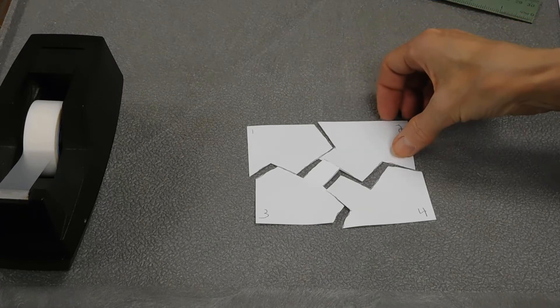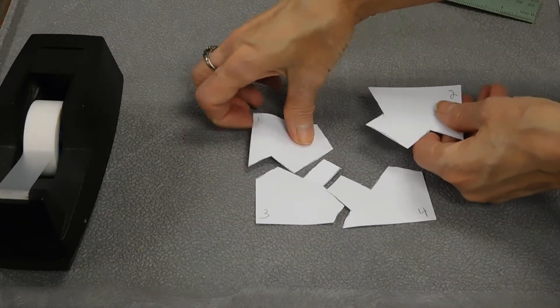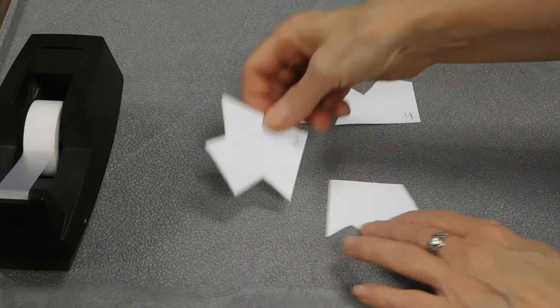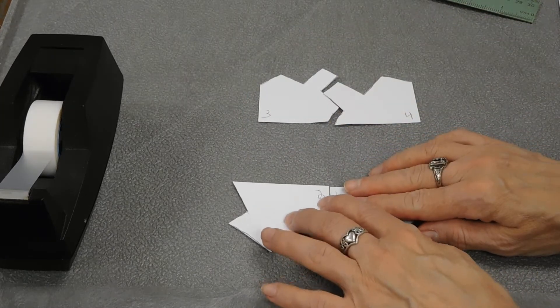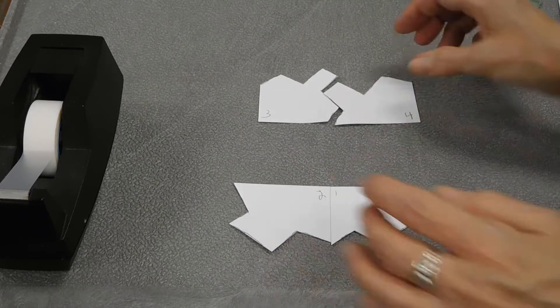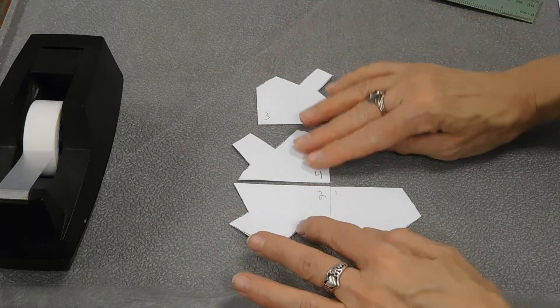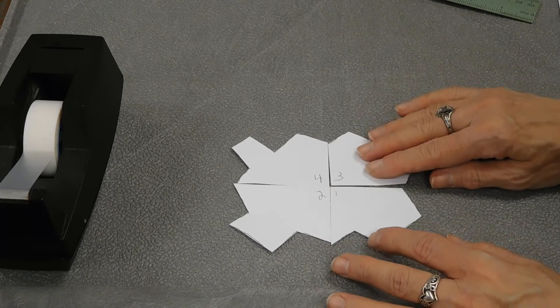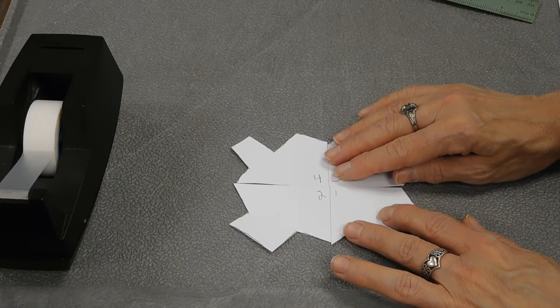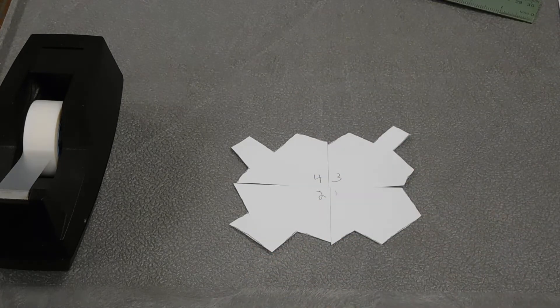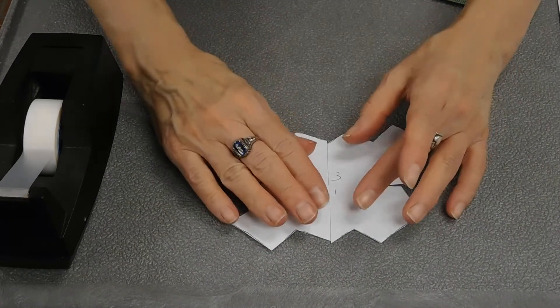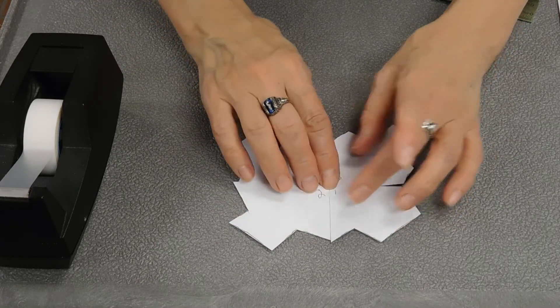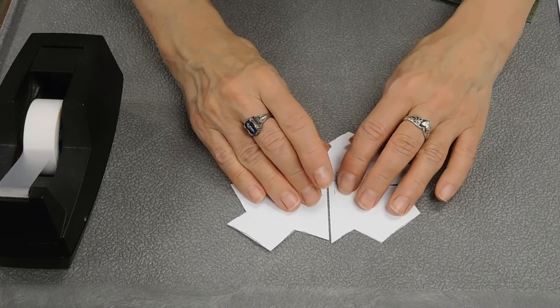The first thing we're going to do is take one and two, move them down, and then we're going to flip the sides that they're on. Then we're going to take four and move it over to the top where three was, and move three there. At this point, you want to make sure you've got your pieces all straight. They're all joined up together.